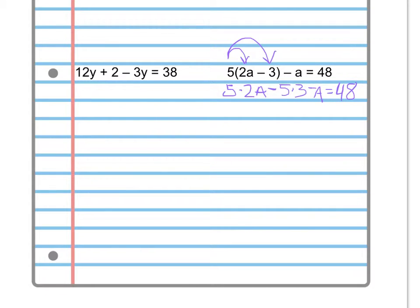So I go 5 times 2a minus 5 times 3. And that's what we get when we do the distribution. Then we have to include that minus a equals 48.